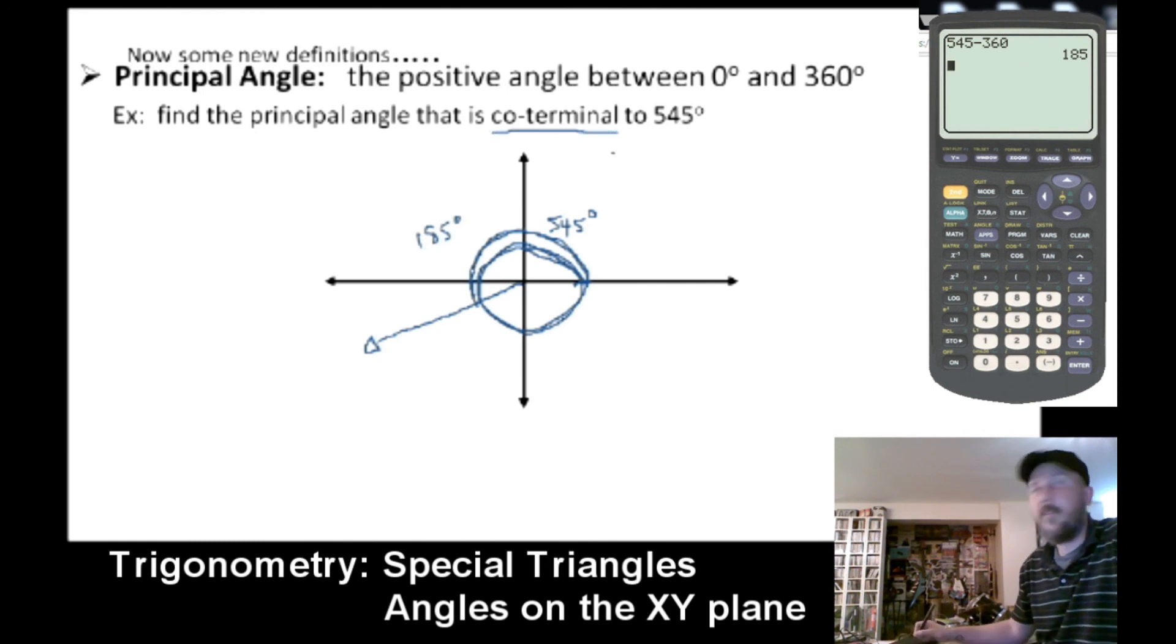Coterminal is another interesting one. That is two angles that share the same arm. So 545 degrees and 185 degrees would be coterminal. They share that same ray. They share that same ray or line off that initial angle there. A ray, I think for the, not thinking of a better term off the top of my head. So terminal arm, terminal arm. That's why they're coterminal. They're on that terminal arm. So 545 and 185. 185 would be the principal angle that is coterminal to that 545 degree angle.